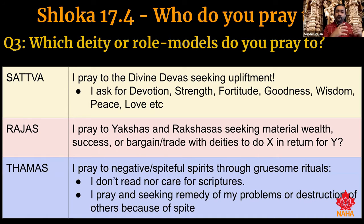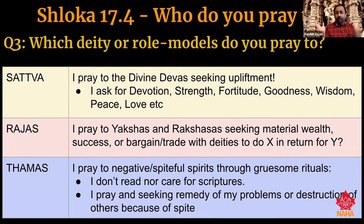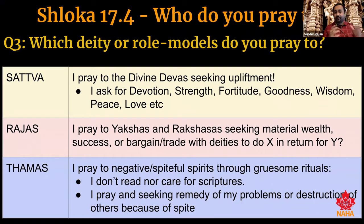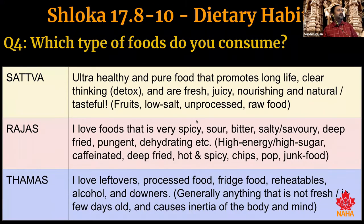For Tamas: are you devoted to negative or spiteful spirits — what the Bhagavad Gita calls worship of corpses, or bhuta worship? This includes praying to gruesome spirits not out of scriptural devotion but to seek a remedy, or to harm others through black magic — vama achara. I'm confident most of you will score zero here, which is why the scale goes from zero rather than one.